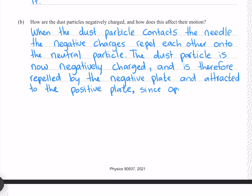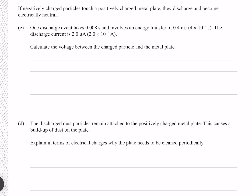If negatively charged particles touch a positively charged metal plate, they discharge and become electrically neutral. One discharge event takes 0.008 seconds and involves an energy transfer of 0.4 millijoules, which is 4 × 10⁻⁴ joules. The discharge current is 2 microamps, which is 2 × 10⁻⁶ amps. Calculate the voltage between the charged particle and the metal plate. We have our time, our current, and our energy. To find our voltage we can use the equation: power equals current times voltage, rearranging for voltage by dividing both sides by current.